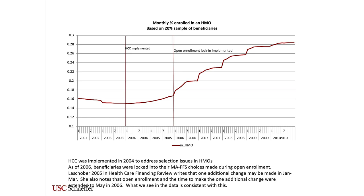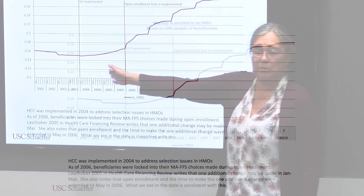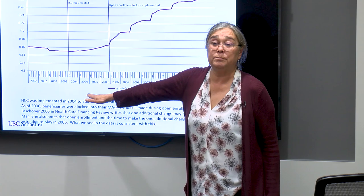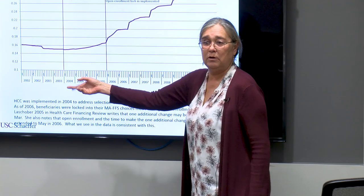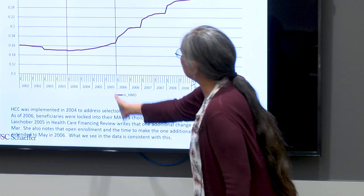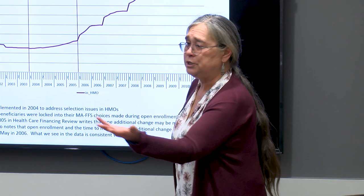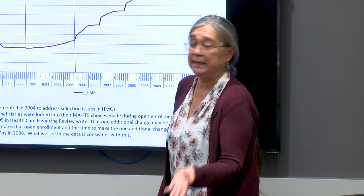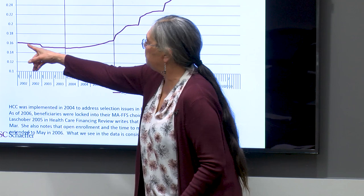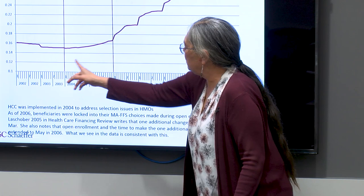A graph shows month-by-month what percentage of Medicare beneficiaries were enrolled in an HMO or MA plan. The first line marks when HCC was implemented for reimbursing MA plans — to encourage recruiting people with chronic conditions. They also had the flexibility to offer prescription drug coverage during 2005. In 2006, open enrollment lock-in was implemented. Before 2005, it was kind of flat or declining slightly. In 2004-2005, you start to see it ramp up.